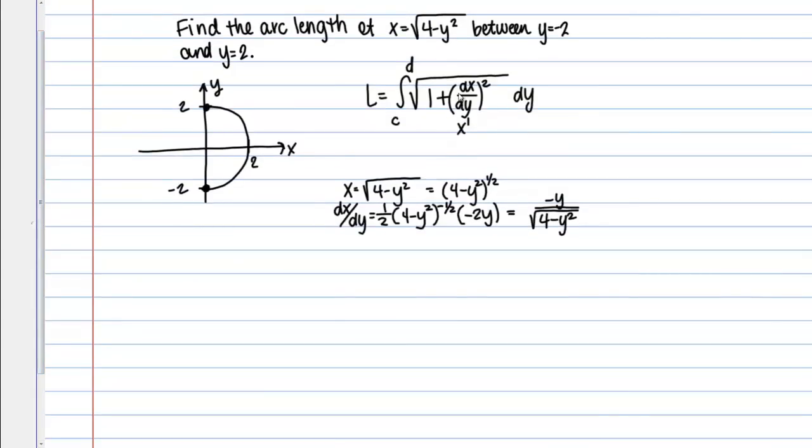Now in our integral, we're going to want this expression squared, so let's go ahead and square it and see what we get in that case. So if I square this derivative that I just found, the top is going to become Y squared, and on the bottom I'm squaring a square root, so I'm just going to be left with 4 minus Y squared on the bottom.